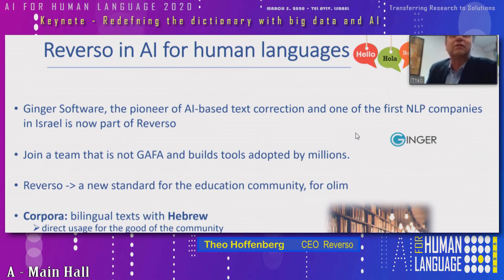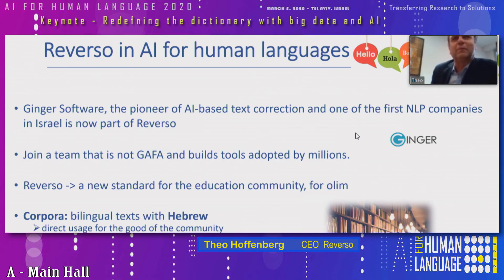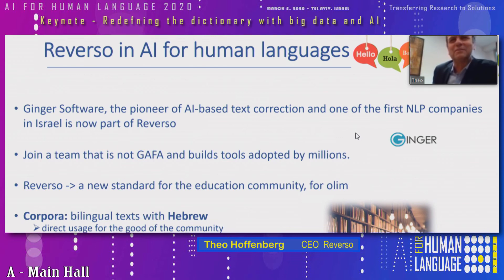Right now we do very fine text correction for English, but there are many different ways to help you write better and faster. We are also welcoming people to join our team, to show that not only the GAFAs can build great tools adopted by millions. It's important that independent teams build world-class products, and there is life outside the GAFAs. Reverso is one of the few that can offer you the possibility to express yourself.